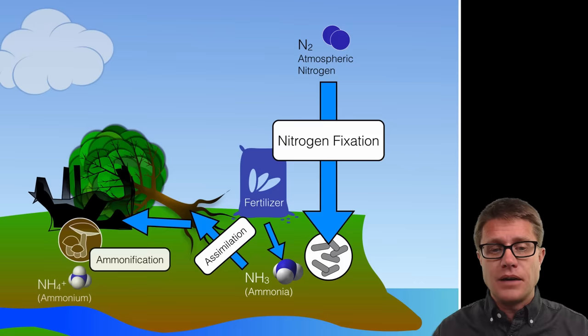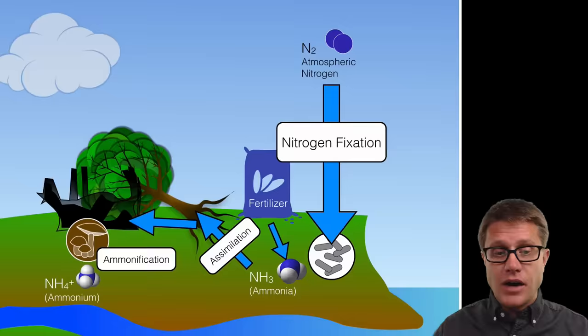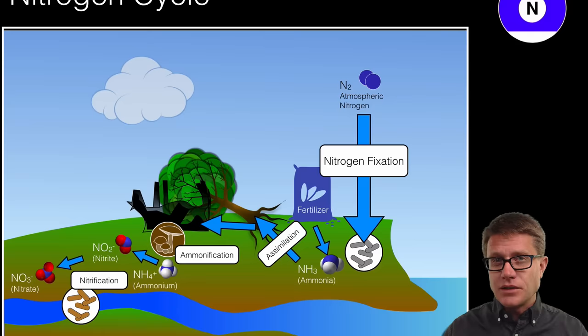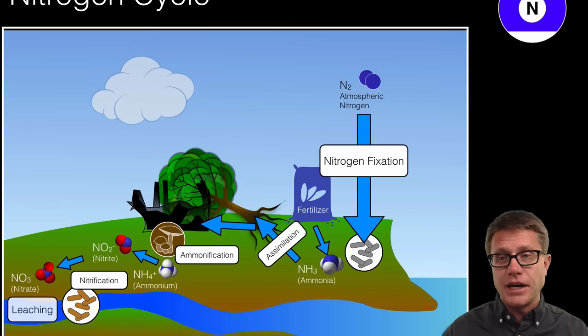Now how does it get returned back to the atmosphere? It is kind of complex. What happens is we have death. We then have decay. And so bacteria or fungi are going to convert that nitrogen into ammonium. And then we have other bacteria, nitrifying bacteria that are going to convert that ammonium into nitrites and then nitrates. Now the nitrates can be leached. They can move into the water supply of our planet.